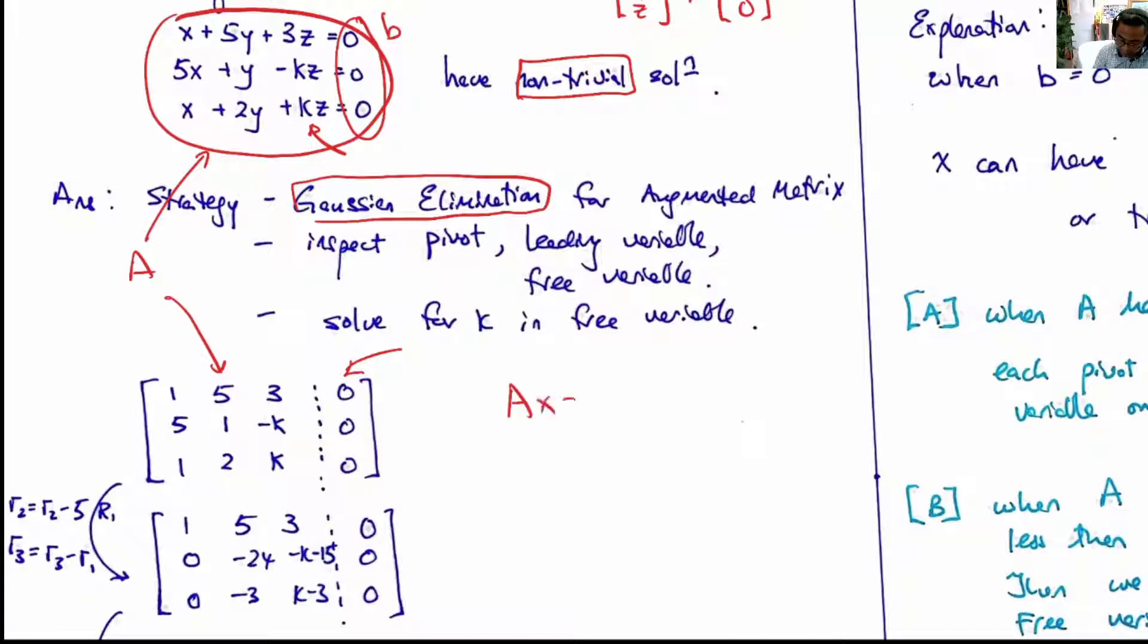the augmented matrix basically will give the variable B in the last column. So it is A times x equals B, written as A|B.